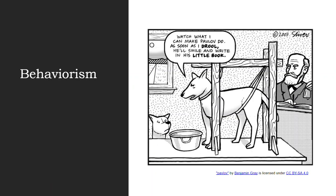So first we're going to talk about behaviorism. Here is Pavlov who trained the dog that whenever he rang a bell then he gave the dog food. And so eventually when the dog would hear the bell ring, which is a stimulus, he would have the response of drooling. This is kind of a funny little comic: watch what I can make Pavlov do. As soon as I drool he'll smile and write in his little book. So in this case the drool is the stimulus and Pavlov writing in his book is the response.